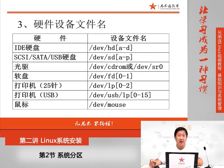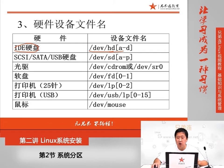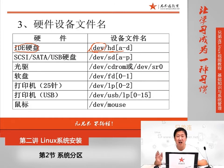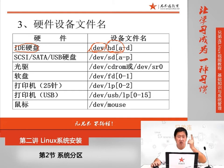这里牵扯到一个Linux的重要概念：在Linux当中，所有的硬件设备都是文件。如果是IDE接口的硬盘，在Linux当中用根目录下的/dev/hda到hdd来代表。这个根目录是Linux最高一级目录，大家可以想象成为Windows当中的我的电脑，所有的数据都保存在根目录下。在根目录当中，有一个叫做dev的一级子目录，它里面放入的所有文件都是硬件文件。如果是IDE硬盘，称作hda，第二个硬盘就是hdb。